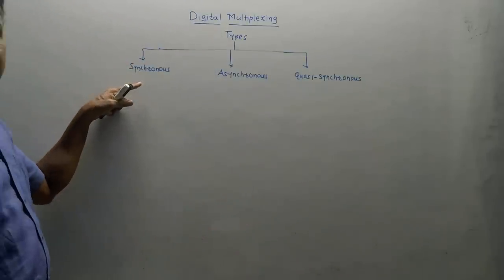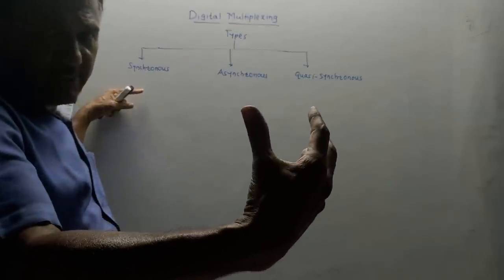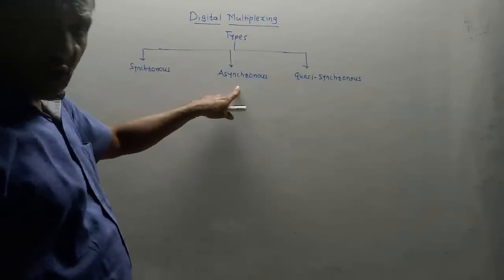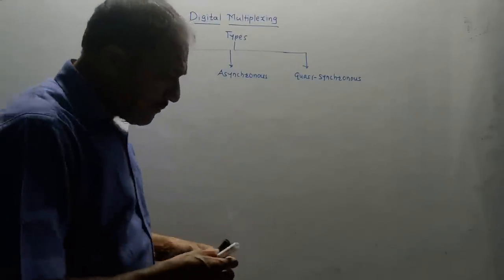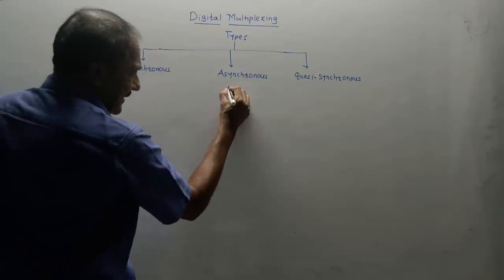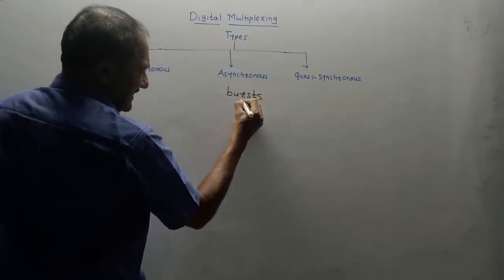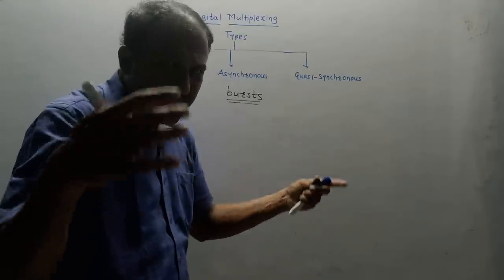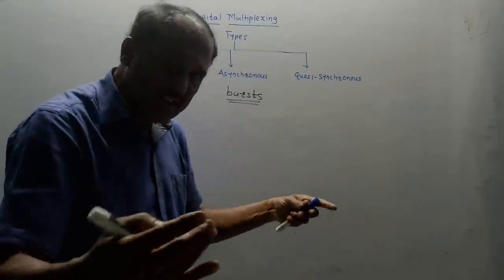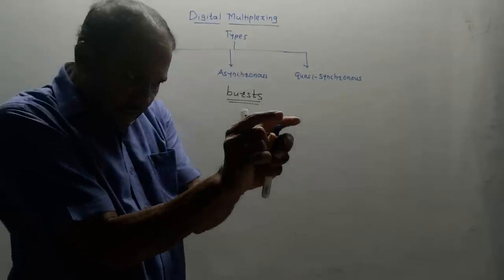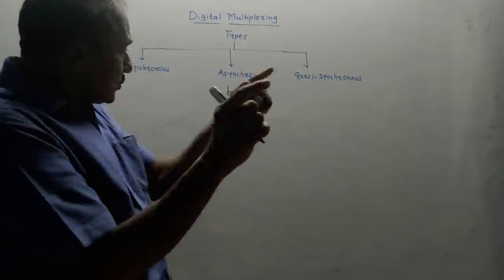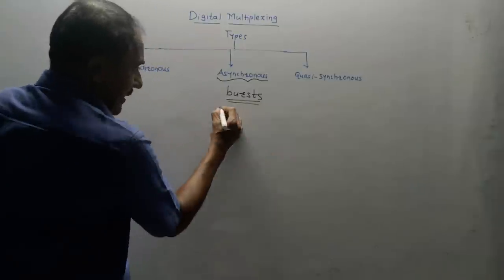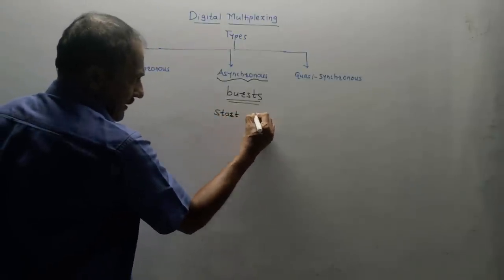The advantage of synchronous type is that there is no variation in the bit rate, so maximum output is generated. But a master clock is required. In the asynchronous case, this technique is used when data arrives in the form of bursts — for example, keyboard data typed as characters with gaps between consecutive characters. In such a case there is no master clock; start and stop bits are used, where the start bit indicates the beginning of a burst and the stop bit indicates the end of a character.